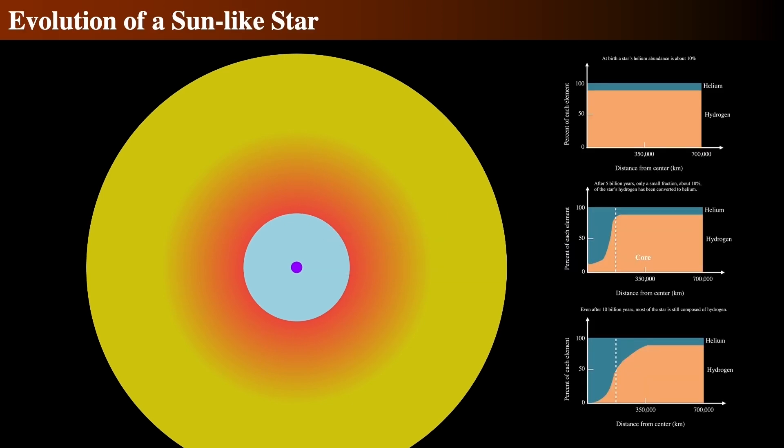Even while on the main sequence, the composition of the star's core is changing. Eventually, as hydrogen in the core is consumed, the star begins to leave the main sequence. Its evolution from then on depends very much on the mass of the star. The diagrams show the percentage of hydrogen in orange and helium in blue. We see the percent going from bottom to top, 0 to 100, and the radius increasing to the right, with the core on the left and the photosphere on the right.